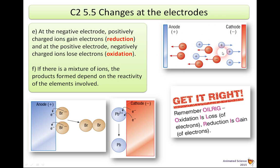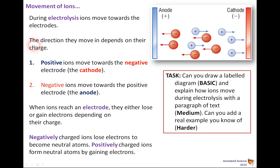We're thinking about anodes and cathodes, the attraction of ions, and what happens in detail at the anode and cathode in terms of electrons. During electrolysis, ions move towards the electrodes. The direction they move depends on their charge — positive ions move towards the negative electrode (the cathode), and negative ions move towards the positive electrode (the anode). When the ions reach an electrode, they either lose or gain electrons depending on their charge.